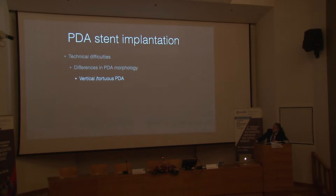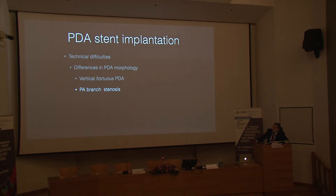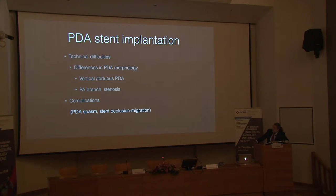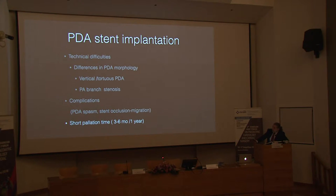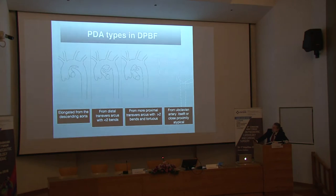Tortuous, vertical, and long ductuses can be very challenging. There can be significant PA branch stenosis, which may affect PA growth, and serious complications including PDA spasm, stent occlusion, and migration can occur, potentially leading to death. Another downside is the relatively short palliation time compared to BT shunts — at best six months, or up to one year with redilation.